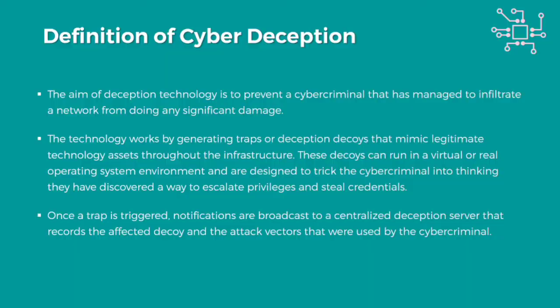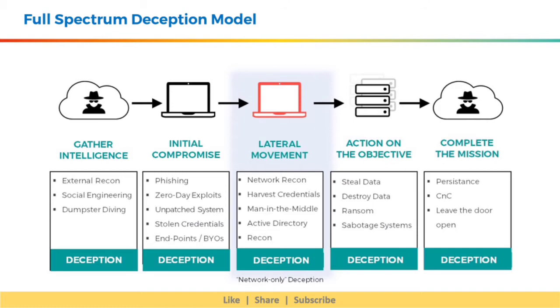Before we deep dive into the course, let's quickly define cyber deception to set the base. The aim of deception technology is to prevent a cyber criminal that has managed to infiltrate a network from doing any significant damage. The technology works by generating traps or deception decoys that mimic legitimate technology assets throughout the infrastructure. These decoys can run in a virtual or real operating system environment and are designed to trick the cyber criminal into thinking they have discovered a way to escalate privileges and steal credentials. Once a trap is triggered, notifications are broadcast to a centralized deception server that records the affected decoy and the attack vectors used by the cyber criminal.